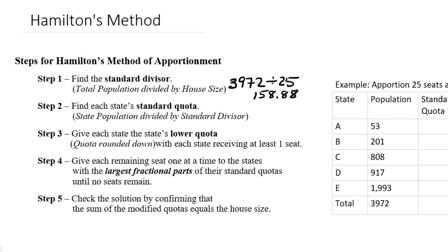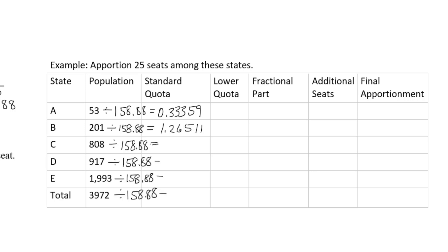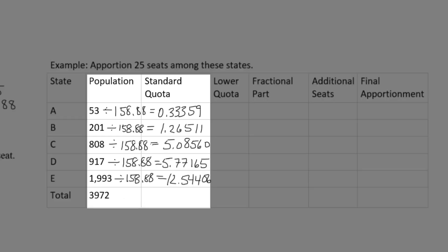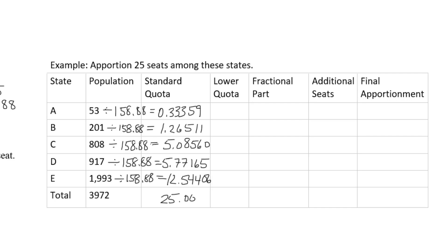Next, step two: we're going to take each state's population and divide it by the standard divisor, 158.88, to get that state's standard quota. For example, if we divide 53 by 158.88, we get a standard quota of 0.33359 — meaning that state would receive about a third of a representative in a fair apportionment. If we divide 201 by 158.88, we get a standard quota of 1.26511, meaning that state deserves roughly one and a quarter representatives. We continue this process for each state. If you add up all the standard quotas, you should get the number of seats, or something very close to it — in this case, we get 25.